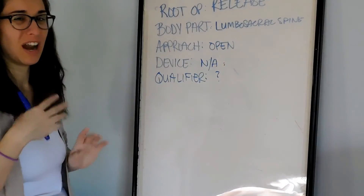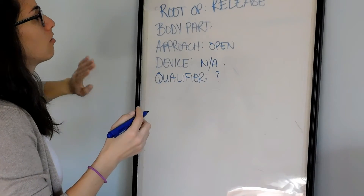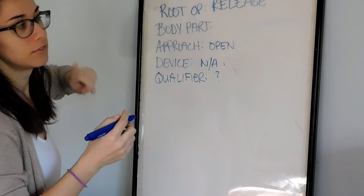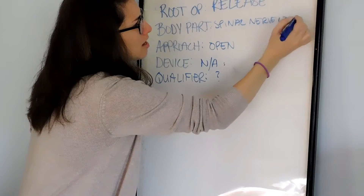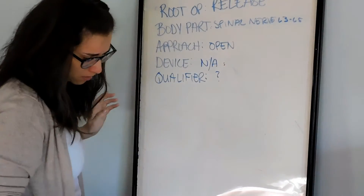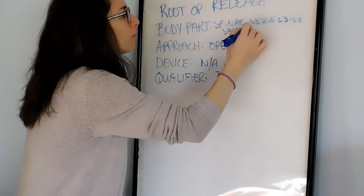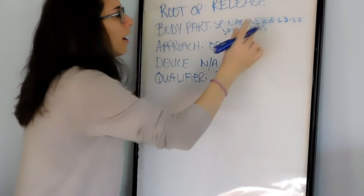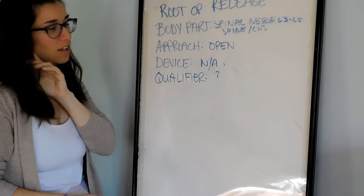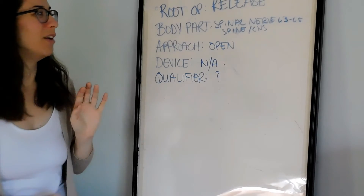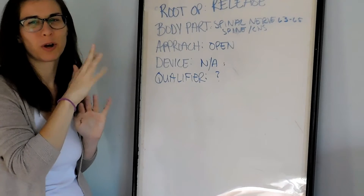We need to update our body part. The spinal nerve is what's being released, at L3 through L5, which is in the spine — central nervous system. Let's go into the book and confirm our body part is acceptable, then confirm the body system.